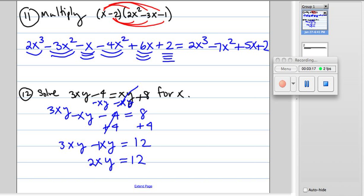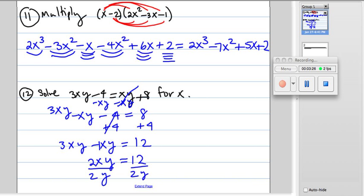Notice there's a 2 being multiplied by it and a y being multiplied by it, so we have to divide by 2y. Divide both sides by 2y. The twos cancel and the y's cancel, and the 12 becomes a 6, so we get x equals 6 over y.